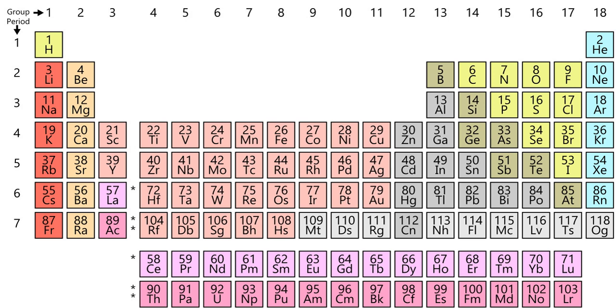The standard atomic weight of an element is the average of the atomic masses of all the chemical element's isotopes as found in a particular environment, weighted by isotopic abundance, relative to the atomic mass unit. This number may be a fraction that is not close to a whole number. For example, the relative atomic mass of chlorine is 35.453 U, which differs greatly from a whole number as it is an average of about 76% chlorine-35 and 24% chlorine-37. Whenever a relative atomic mass value differs by more than 1% from a whole number, it is due to this averaging effect, as significant amounts of more than one isotope are naturally present in a sample of that element.